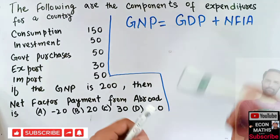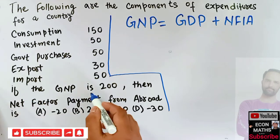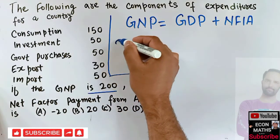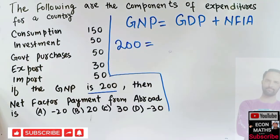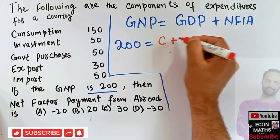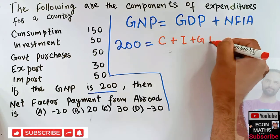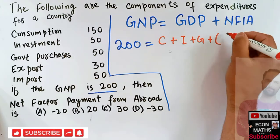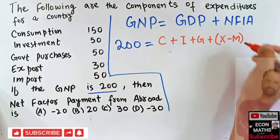GNP is the aggregate of the GDP and net factor income from abroad. That means we are being told GNP is 200, so in place of GNP I can write 200 is equal to—now what is GDP? GDP is simply our consumption expenditure plus investment expenditure plus government expenditure plus export minus import. Let's denote X by export, minus M is the import. This is the basic GDP formula, then we have net factor income from abroad.